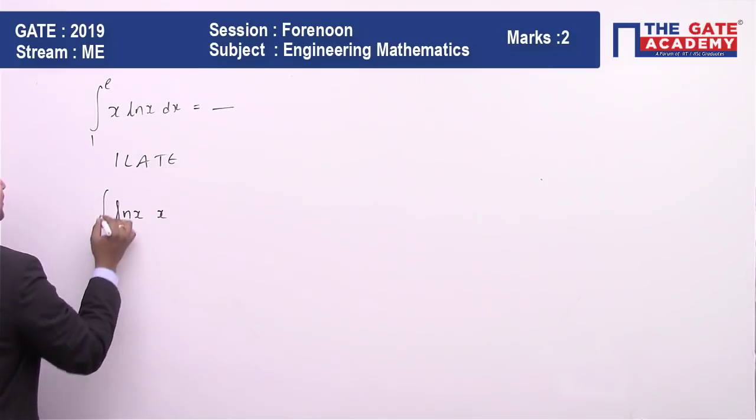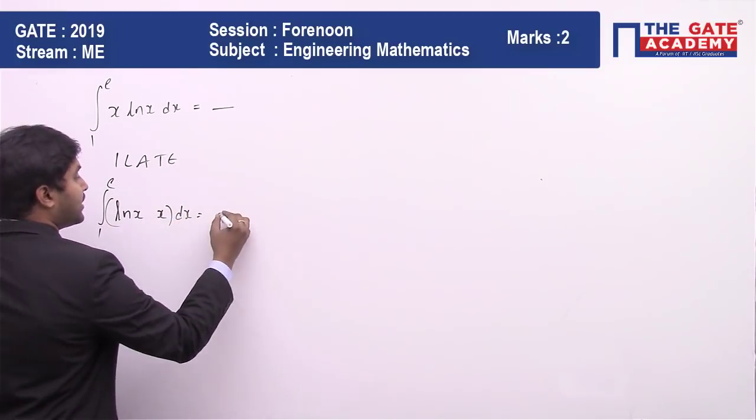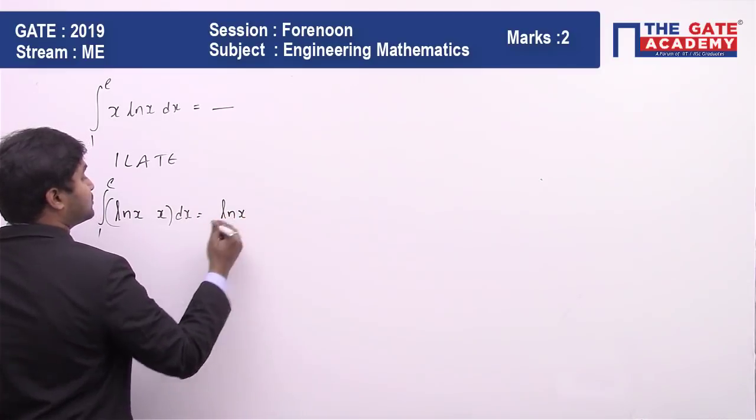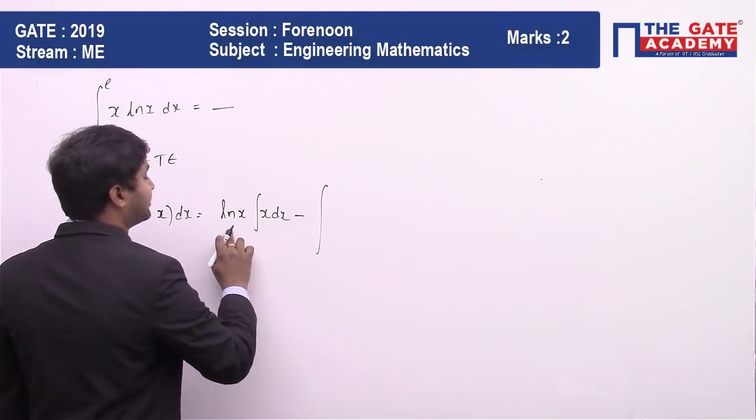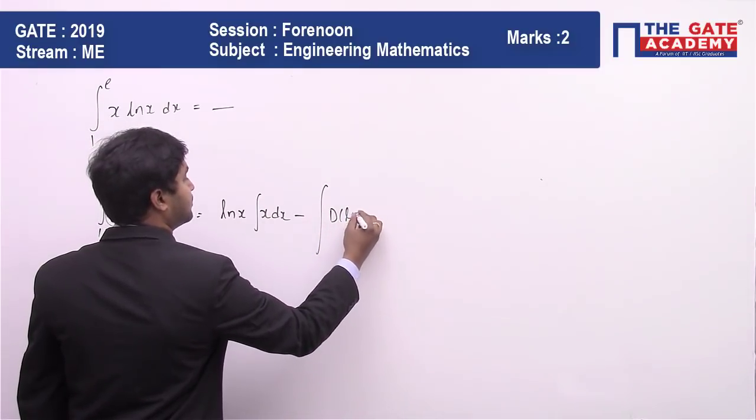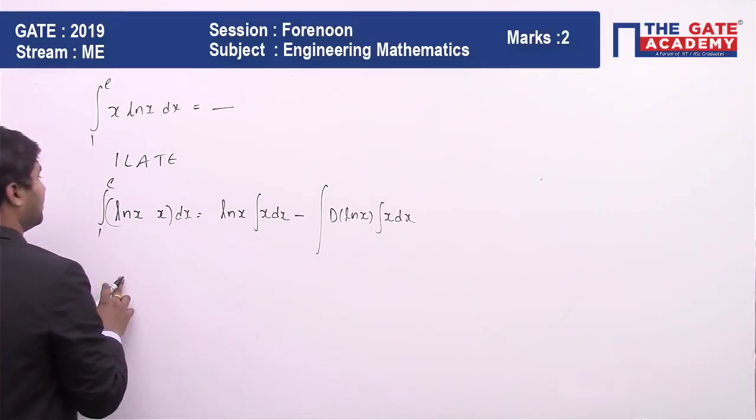Integral 1 to e dx. This is equal to ln(x) comes outside integral of x dx, minus integral of derivative of ln(x) times integral of x dx.